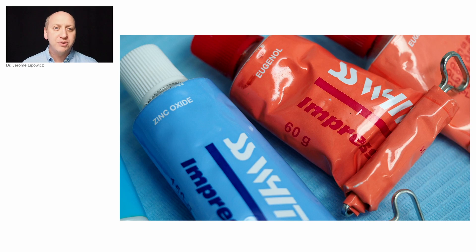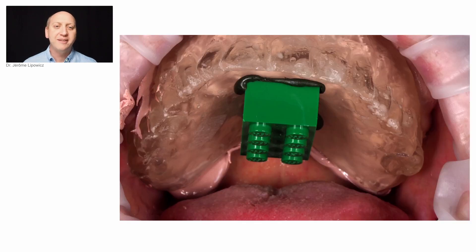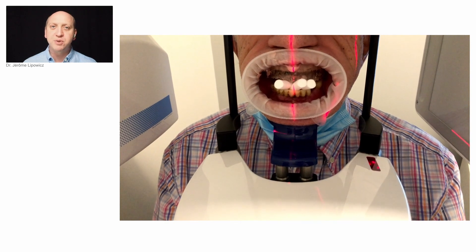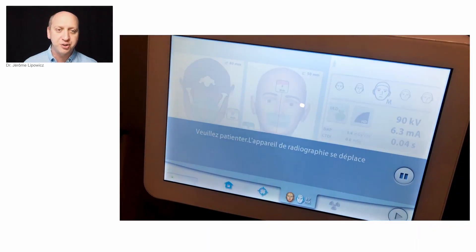And then we use that good old impression paste so we can reline the denture just like this. Now, the most important part is to proceed with the cone beam CT without removing the relined duplicated denture.